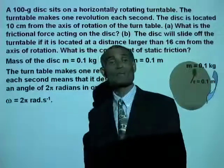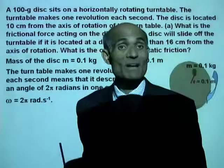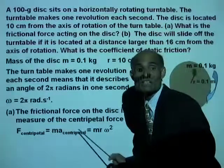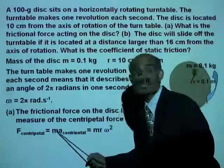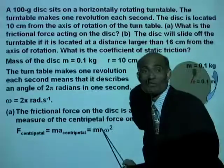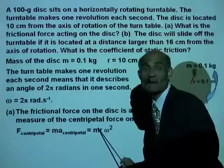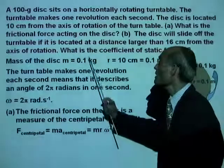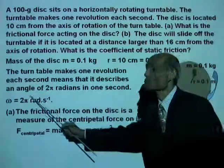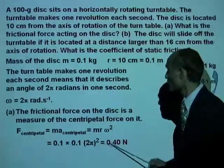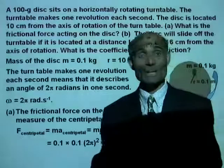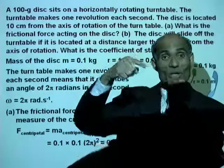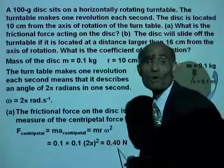The centripetal force is F = m r omega squared — mass times centripetal acceleration, since centripetal acceleration is r omega squared. We know the mass, the radius, and omega. Therefore the centripetal force is 0.4 Newton. For the disc to sit there and go around the circle comfortably, there must be a minimum frictional force of 0.4 Newton.